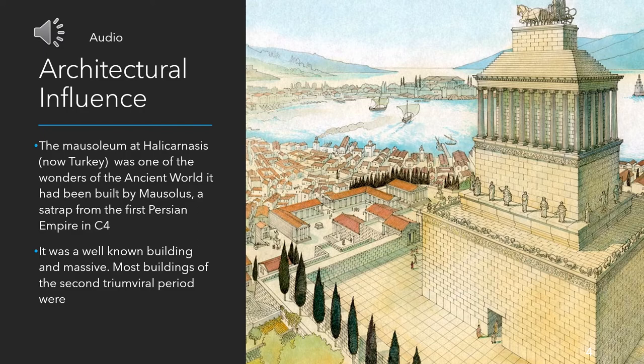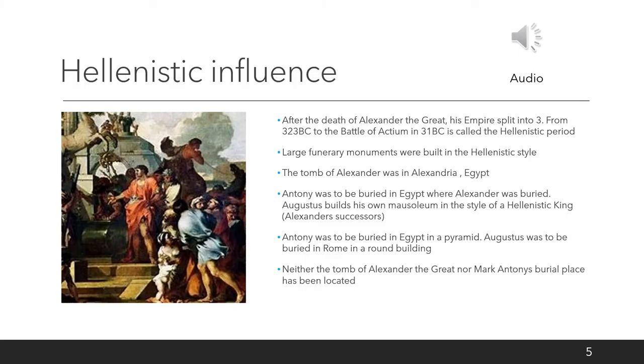The building you can see on this slide is the Mausoleum of Halicarnassus — the structure on which Augustus based his mausoleum. It was one of the wonders of the ancient world and had been built by Mausolus, a satrap — a provincial governor — of the first Persian Empire in the fourth century BC. It was a very well-known and massive building. Augustus was clearly basing his mausoleum on that wonder of the ancient world.